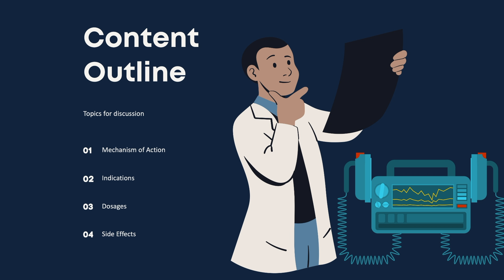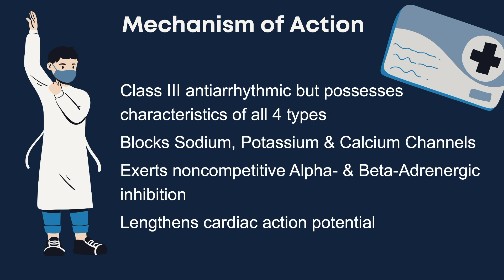In this video we'll review AMEO's mechanism of action, indications, dosages for adult and pediatric resuscitation, and review some of its common side effects. Amiodarone is a complex drug, known as a class 3 anti-arrhythmic with effects on sodium, potassium, and calcium channels, as well as alpha and beta adrenergic blocking properties.